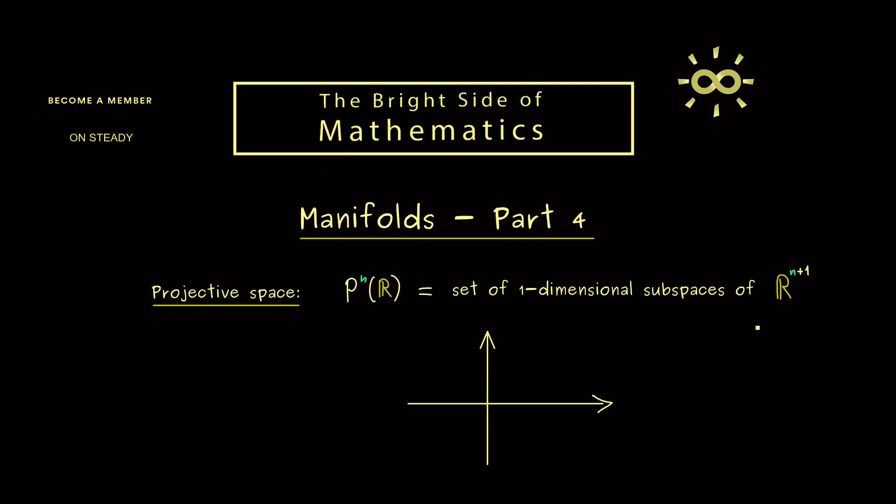Hence we take R^2 and look at the one-dimensional subspaces in it. In other words we have to look at all the lines that go through the origin. Therefore each direction we have here gives us an element in P^n(R). Now I show you soon how we formally do this but you should see we don't have any problems defining this set.